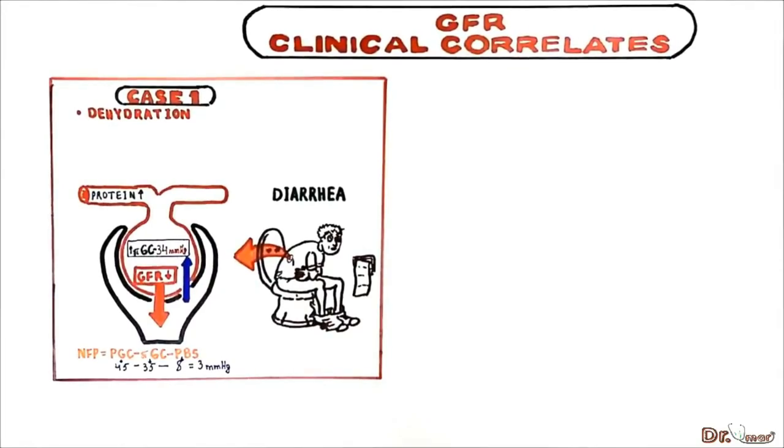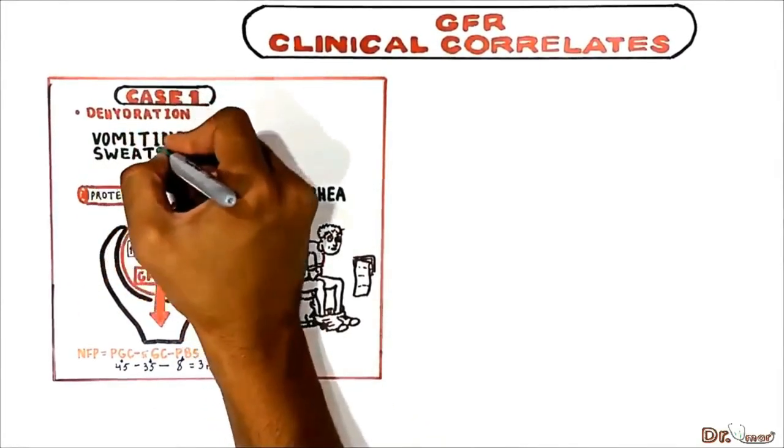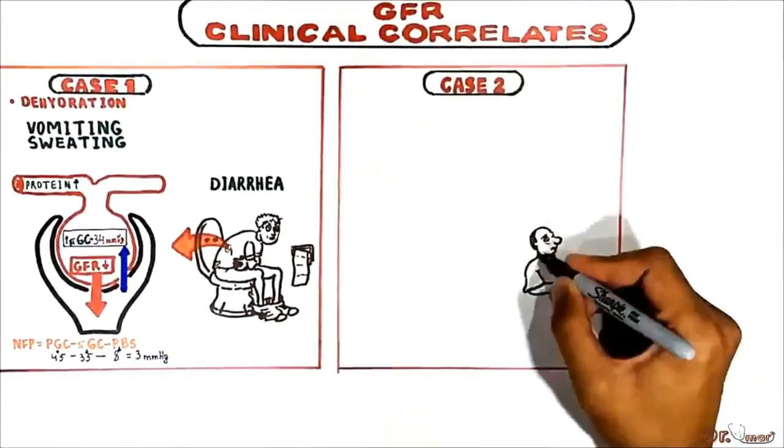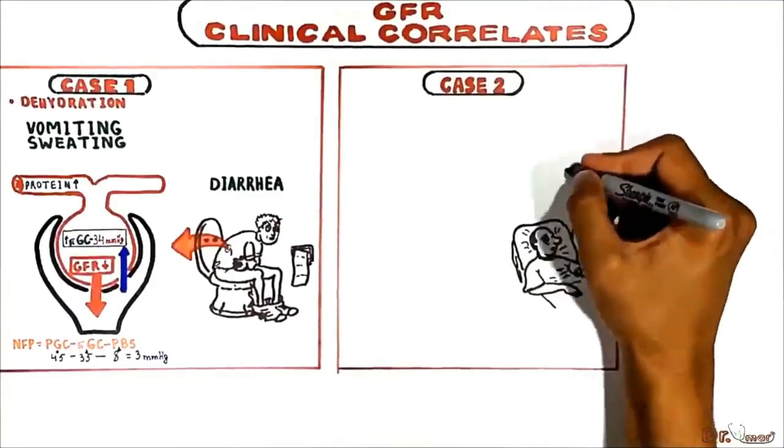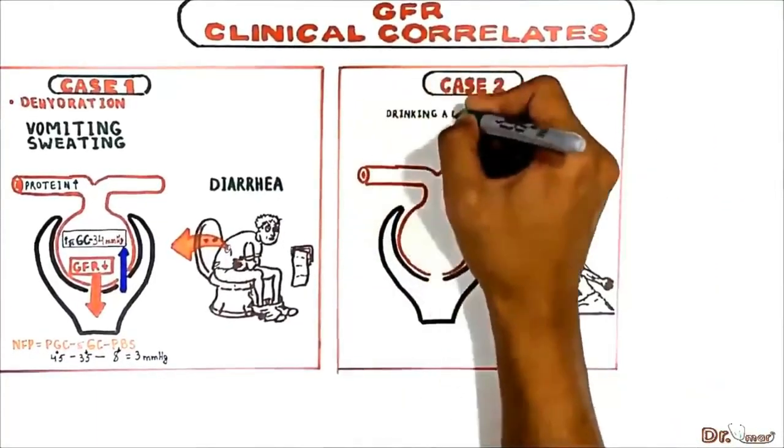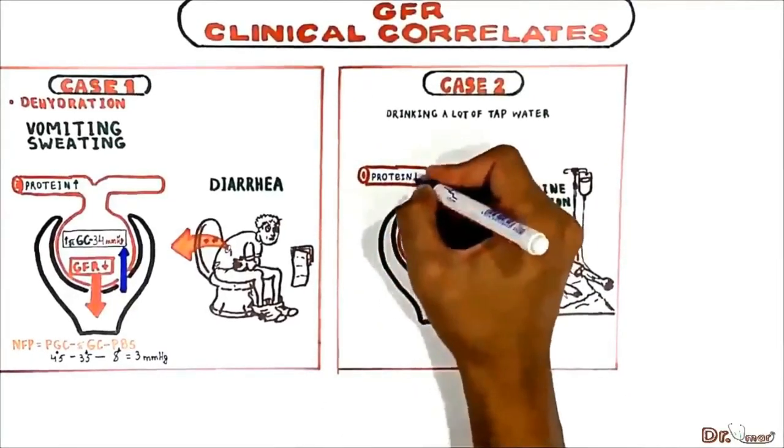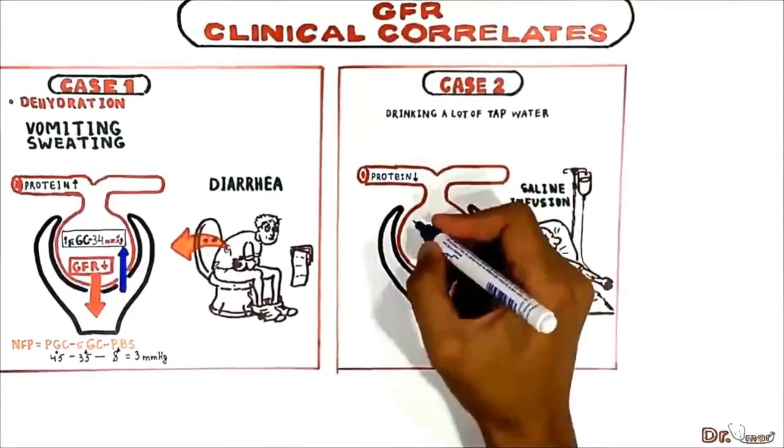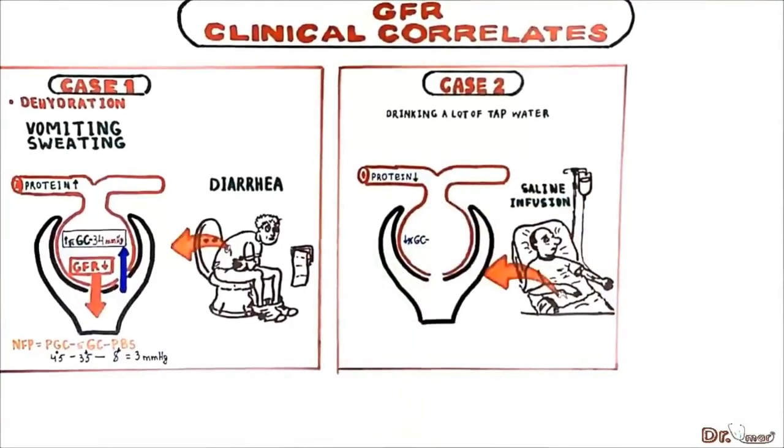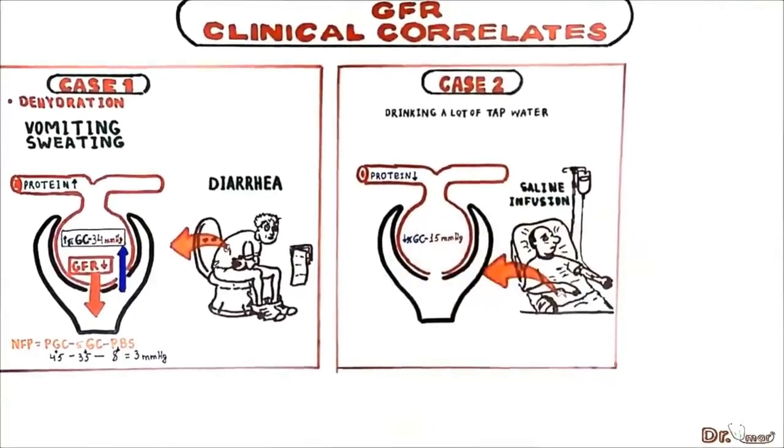Protein concentration increases in case of excessive vomiting or sweating. In the opposite case, when a patient is infused with saline or drinks a lot of water, the protein concentration in blood decreases which leads to decreasing oncotic pressure in glomerular capillaries. Suppose it drops down to 15 mmHg.